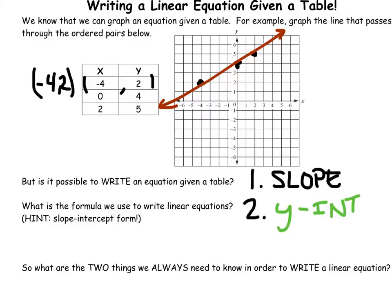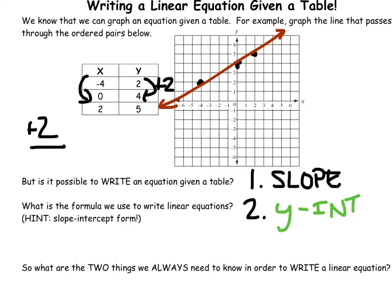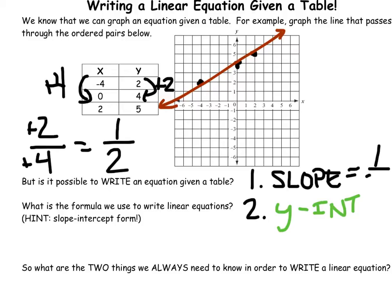So since we need the slope, let's look at this. As it turns out, we can just look at the table. We can find the slope from just the table. So you could say, what's the change in Y? Well, this one went up 2, so my slope is up 2. And then this one went up 4. So if I were to simplify this, it would just be 1/2.